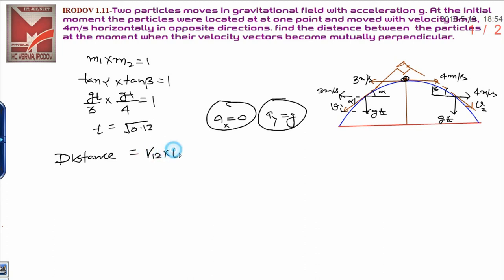Velocity of 1 with respect to both are in opposite direction, that is why v12 can be written as v1 minus v2, where v1 is 4 meter per second minus v2 is negative that is 3, and finally it becomes 7 meters per second.